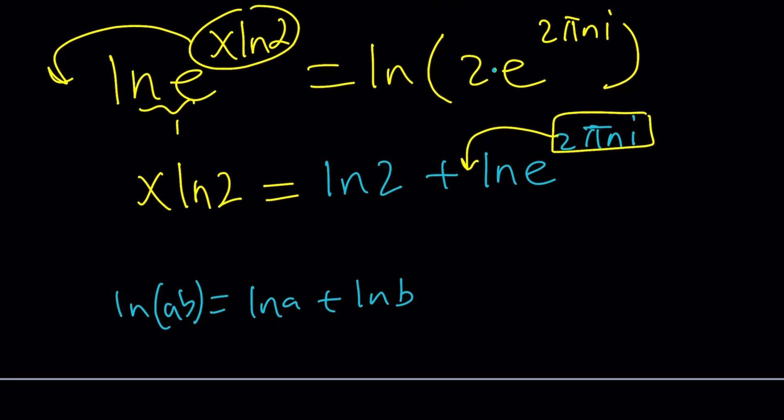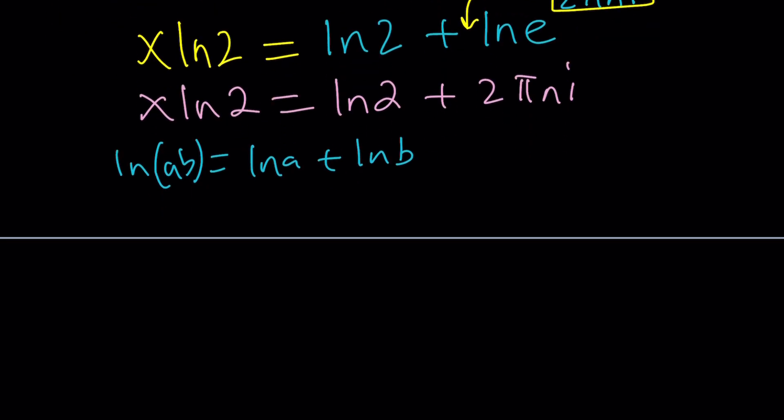So this can be written as, actually, x ln2 equals ln2 plus 2 pi n i. You can also think of it this way. If z can be written as r e to the i theta, then ln z is just going to be ln r plus i theta.